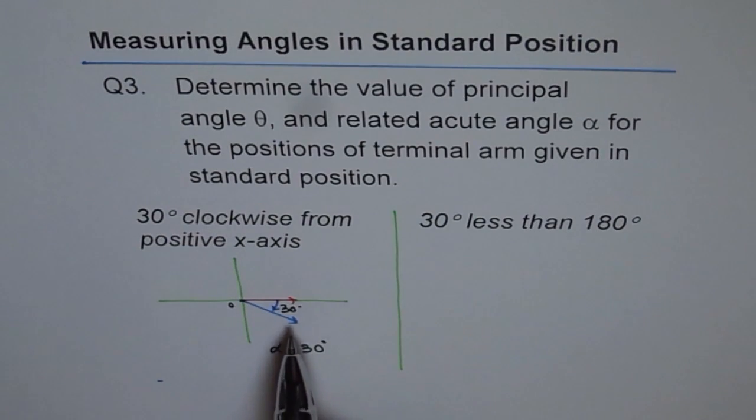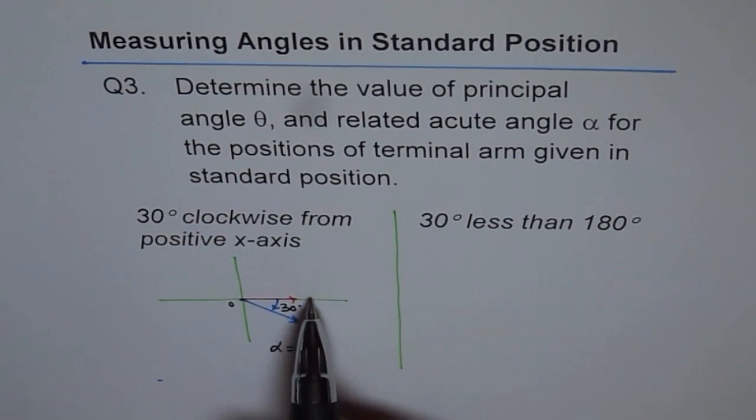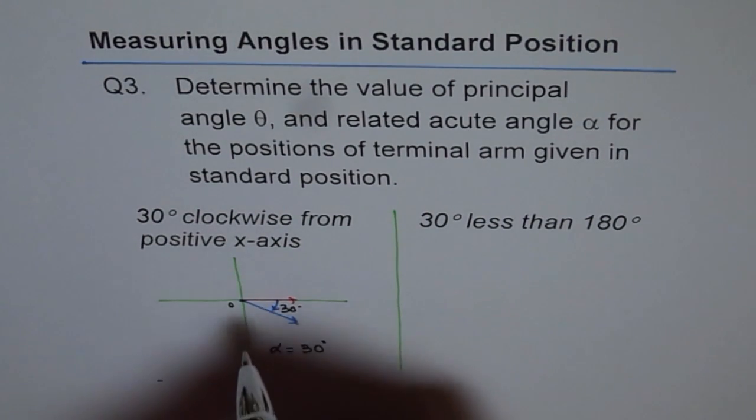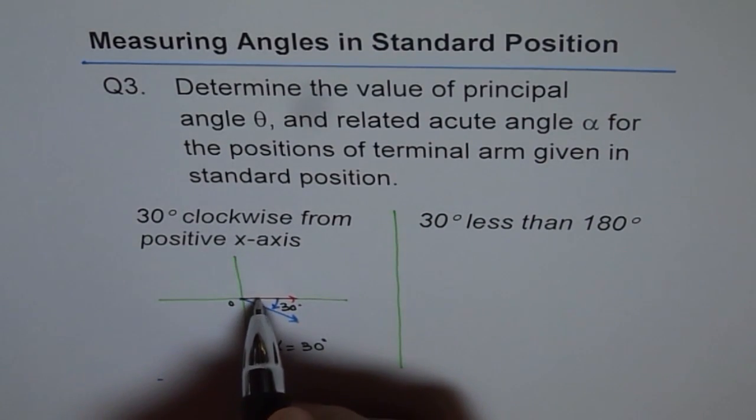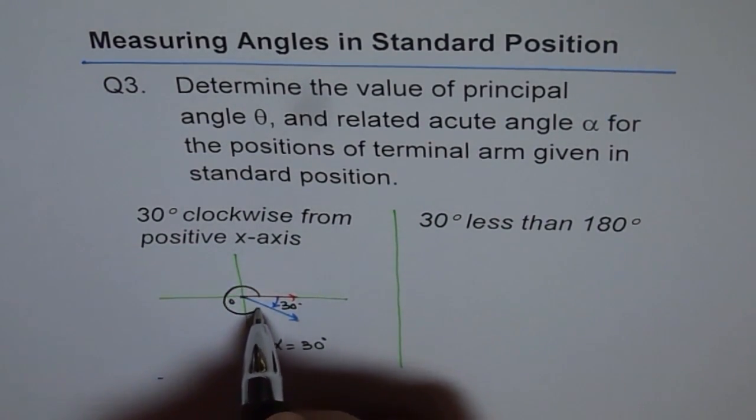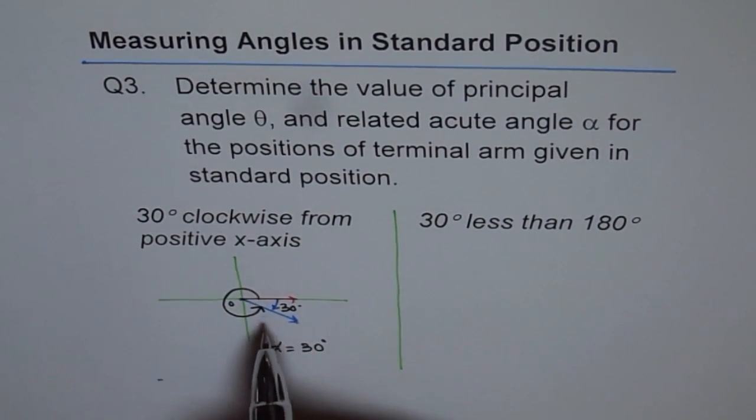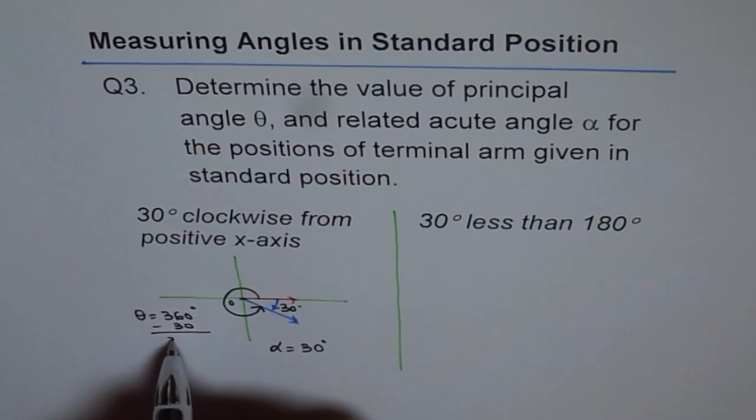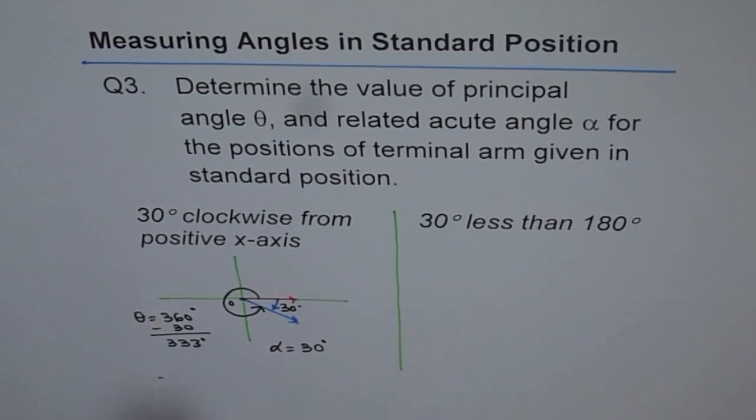The angle which terminal arm makes with the horizontal x-axis. Now how much is the principal angle here? The principal angle is always counter clockwise from initial to terminal arm. So it is 30 less than 360. So we say theta equals to 360 minus 30. Which is 330 degrees. So that is our answer.